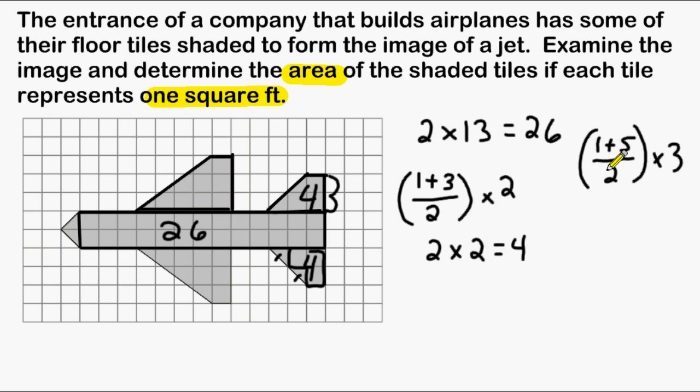So we have 1 plus 5, which is 6, and 6 divided by 2 is equal to 3. And we are going to have to multiply that answer by the height of the trapezoid, which is 3. And that gives us a total of 9 square units. So the area of this section is 9, and the area of this section is 9.